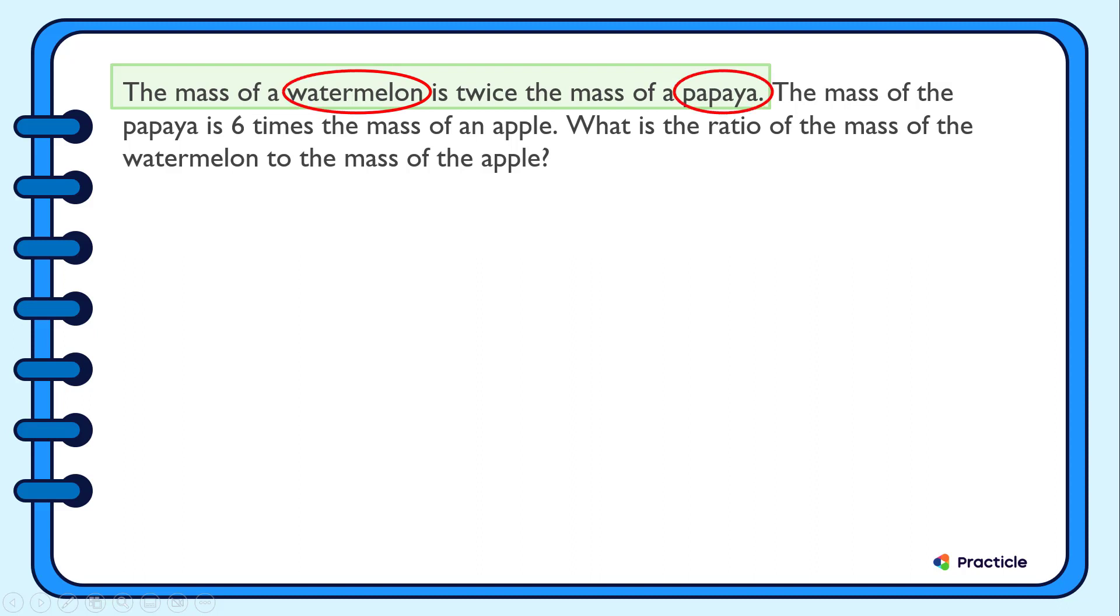Do you know which fruit is heavier? Since the mass of a watermelon is two times the mass of a papaya, the watermelon is heavier.